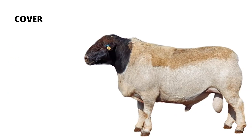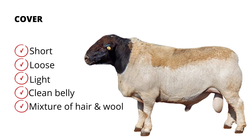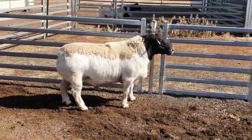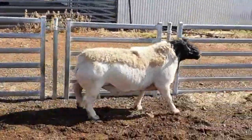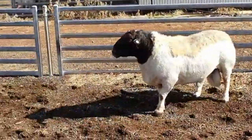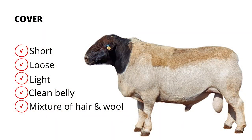There are three magical words for cover: short, loose and light. And preferably with that we want a clean belly. A clean belly reflects the heat that comes off of the ground and also doesn't pick up any burrs. A sheep with a nice mixture of hair and wool always does better. If they are too clean, they tend to be a dry sheep, which means they do not have enough body fat. And the same if they have too much wool — they also are too dry and do not have enough body fat. So rams with a short, loose and light cover with a mixture of hair and wool are better growers. They are more hardy and they have the right amount of body fat.